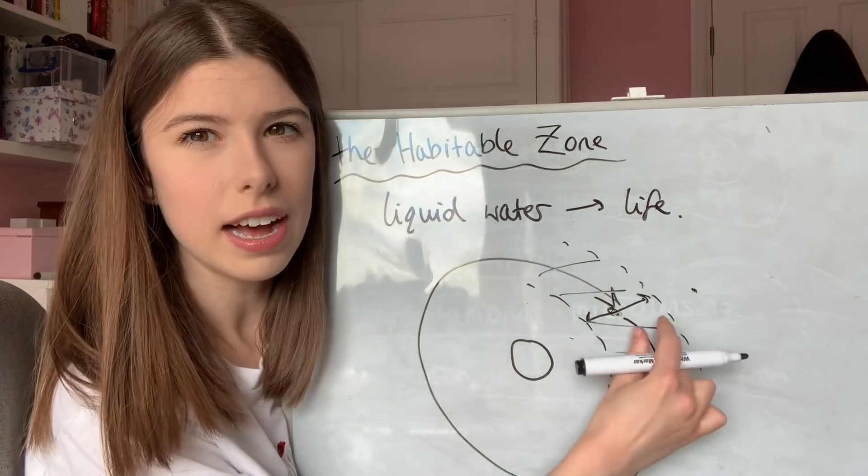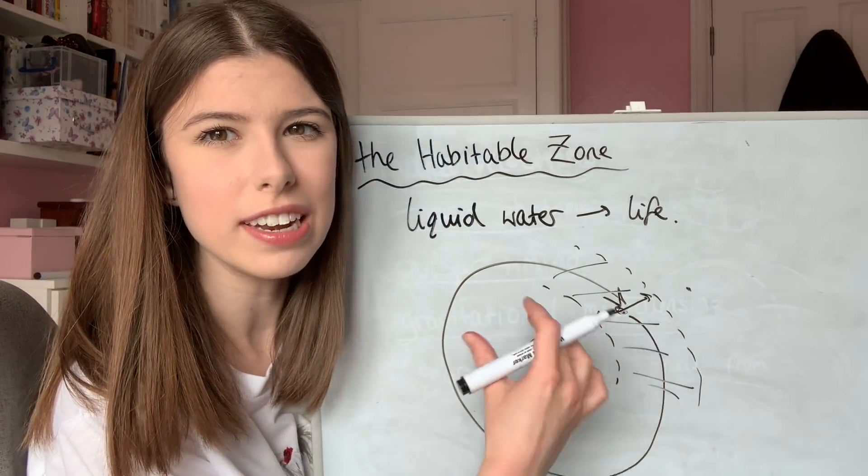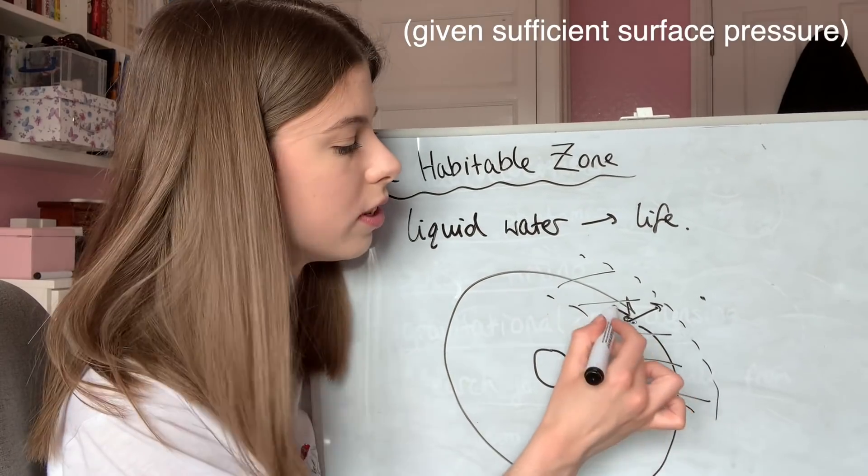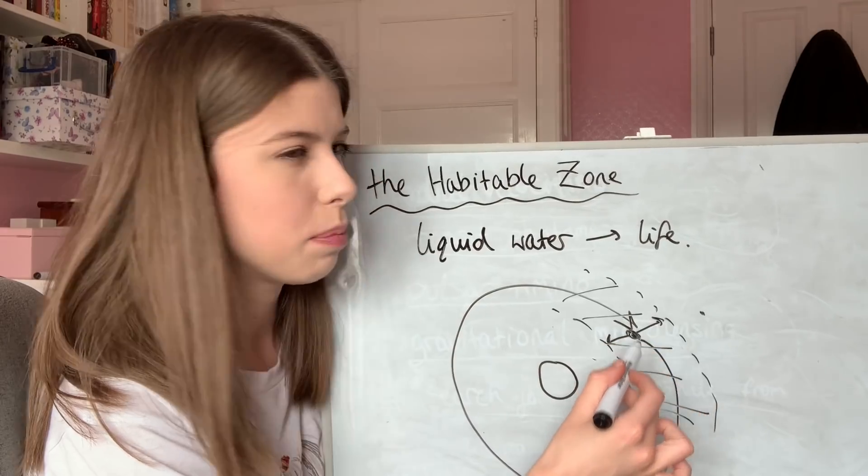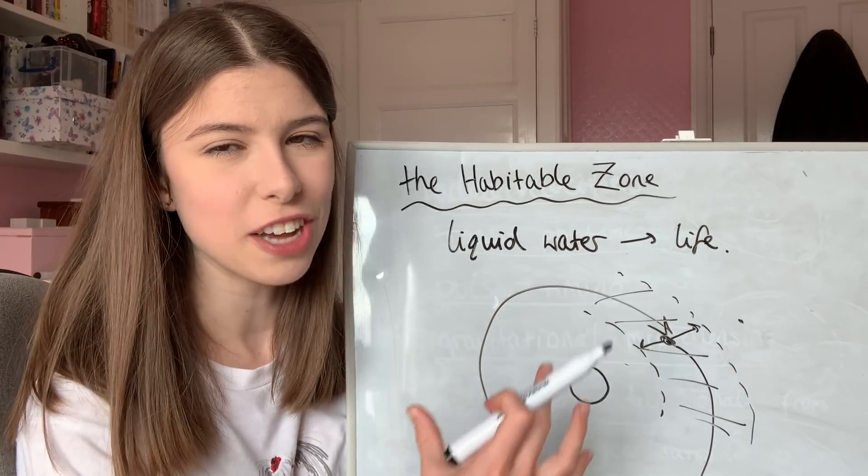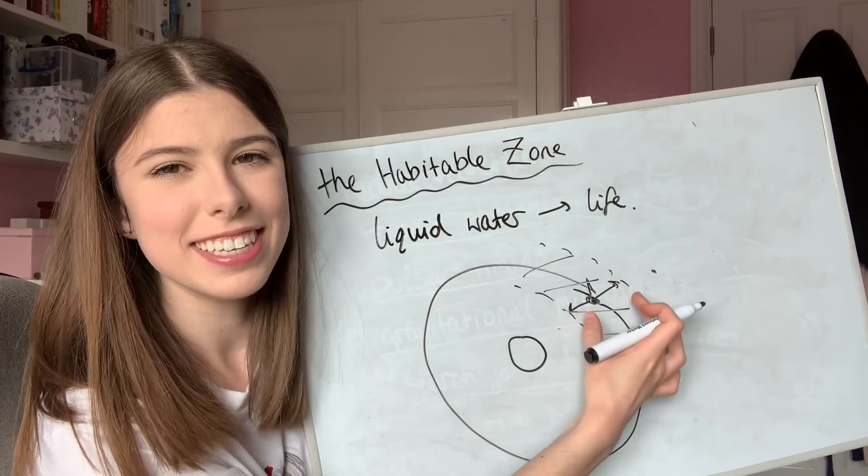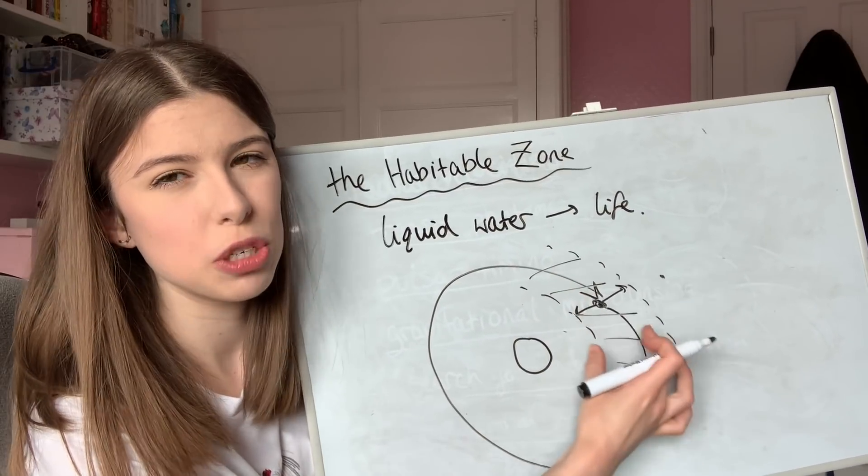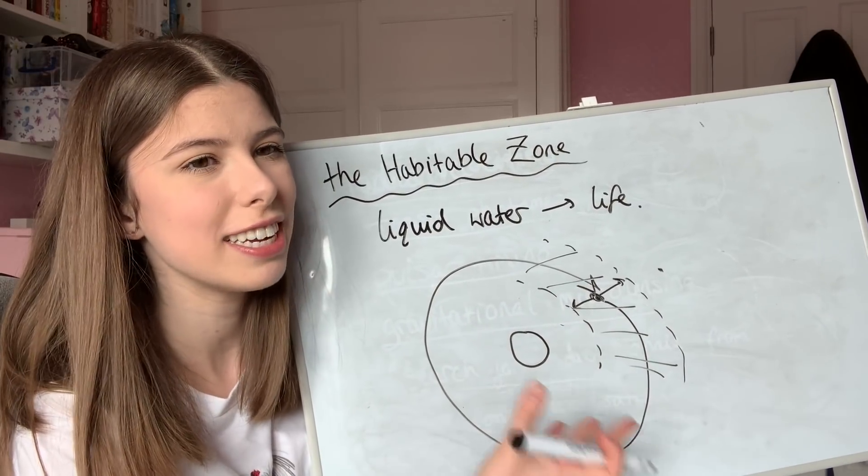Say this is our region here, at a set distance from the star, where liquid water can exist on the surface of the planet. I.e., the planet is warm enough that the water's not ice, and it's cold enough that the water's not water vapor. This region here is called the habitable zone, because liquid water can exist on the surface of the planet, so we could imagine life happening on the planet.